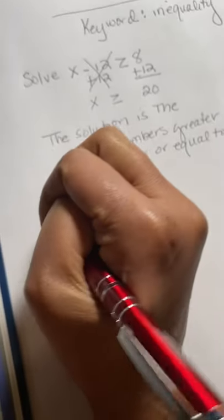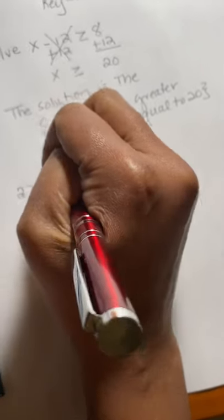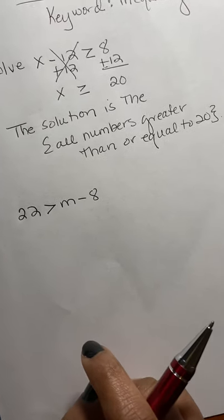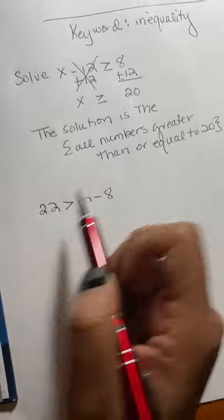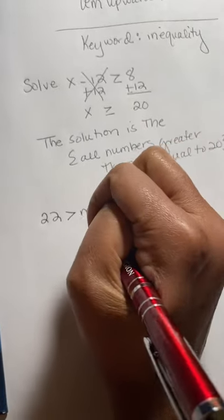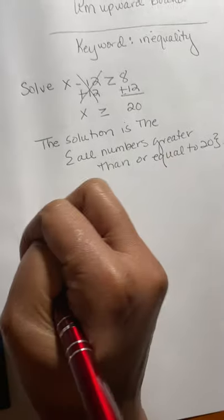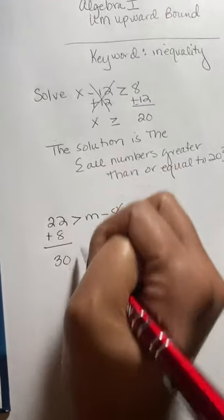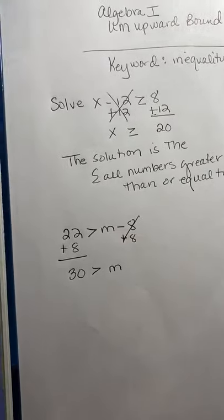Let's try another one. 22 is greater than M minus 8. How will we work this one out? I definitely will move the negative 8, use the inverse and move it over here underneath the 22. So the inverse of negative 8 is positive 8.